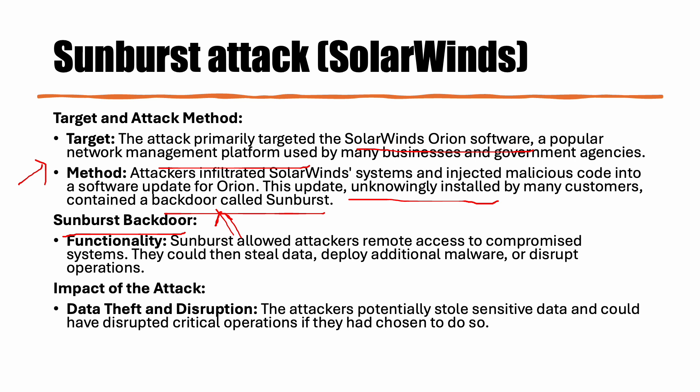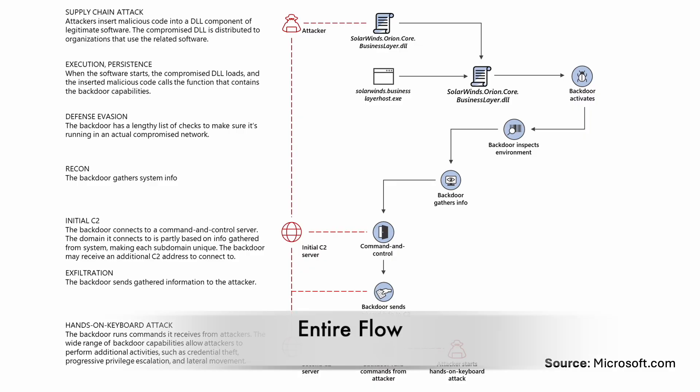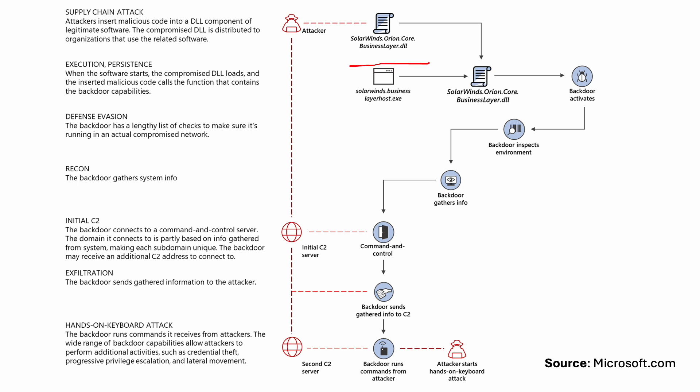The Sunburst backdoor allowed attackers to have remote control of compromised systems, enabling them to steal data, deploy additional malware, or disrupt operations. In terms of impact: data theft was clear, and the attackers also had the potential to disrupt and halt all operations. However, they chose not to disrupt operations — they wanted to steal information without alerting the affected organizations to their presence.